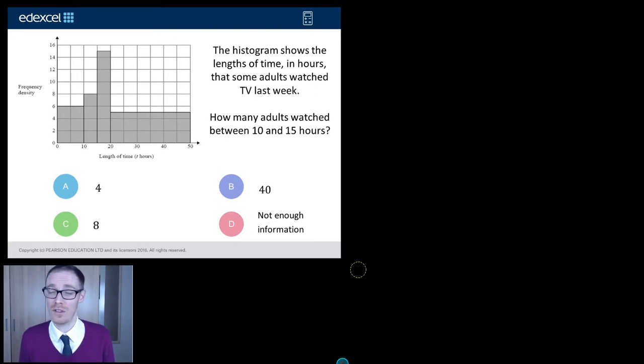Students are going wrong left, right and centre, so hopefully this video will help put you on the right track. So let's take a look at it. It's been written by Edexcel and it goes like this: the histogram. Now, I know it's a bit obvious to highlight that word there, but it always helps just get you in the right frame of mind of thinking what statistical diagram this is. And I love a histogram, so I'm very happy with this question. Shows the length in time in hours that some adults watched TV last week.